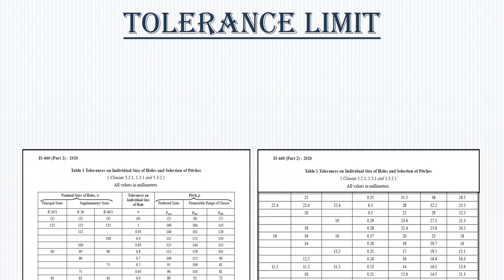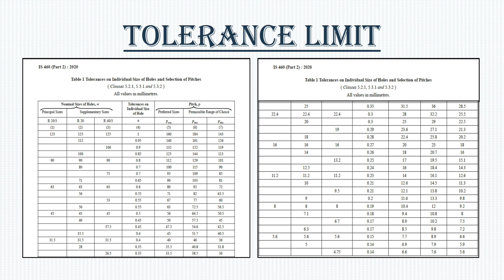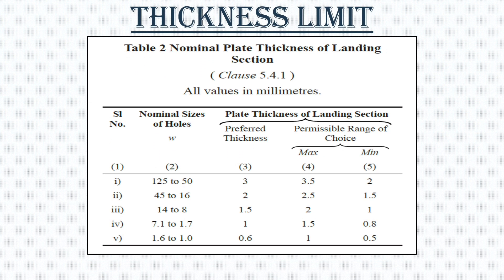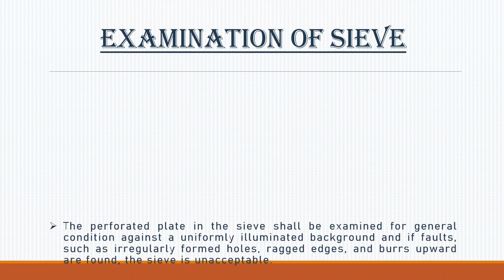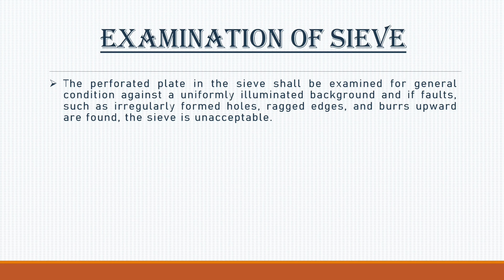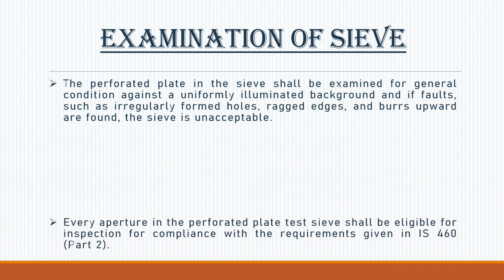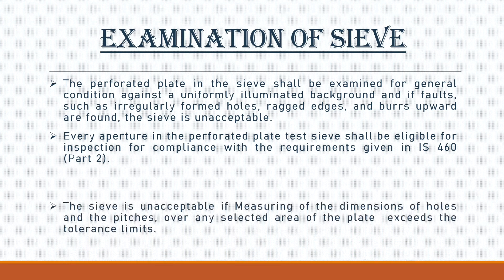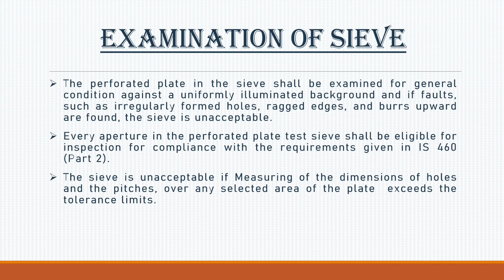Tolerance limits as per specifications for nominal size of hole and pitch are shown here. The perforated plate in the sieve shall be examined for general condition against a uniformly illuminated background. If obvious faults such as irregularly formed holes, ragged edges, and burrs upward are found, the sieve is unacceptable. Every aperture in the perforated plate test sieve shall be eligible for inspection for compliance with the requirements given in IS-460, Part 2, 2020. The sieve is unacceptable if measurements of hole dimensions and pitches over any selected area exceed the tolerance limits.